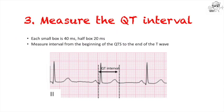Step number three is straightforward. Now that you have identified the onset of the QRS and the end of the T-wave, you can calculate the interval between those two points. Remember that a small box is 40 milliseconds and a half box is 20 milliseconds.